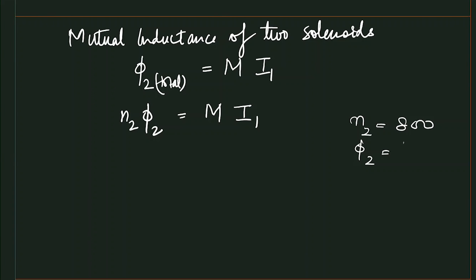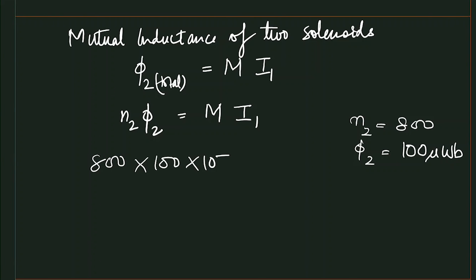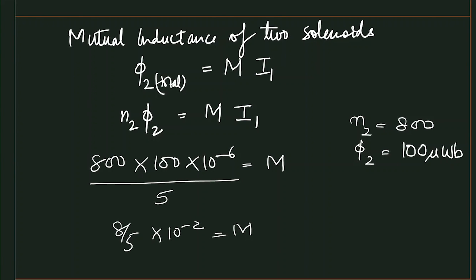φ2 = 100 micro-weber. So substituting: M = (N2 × φ2) / i1 = (800 × 100×10⁻⁶) / 5 = (8/5)×10⁻² = 1.6×10⁻² henry. This is the value of the mutual inductance.